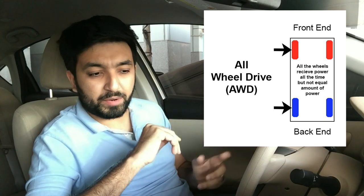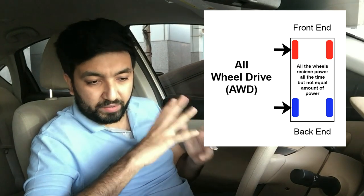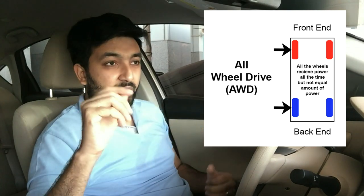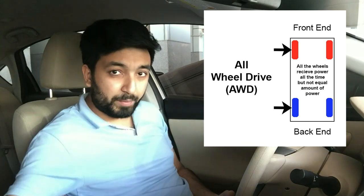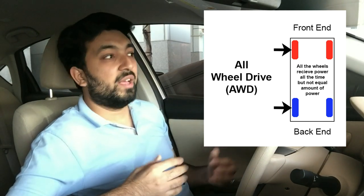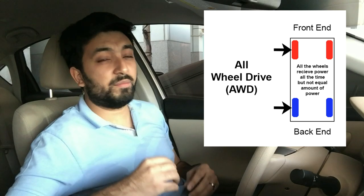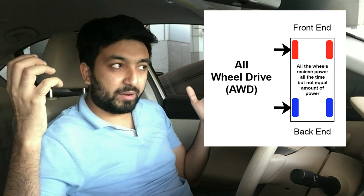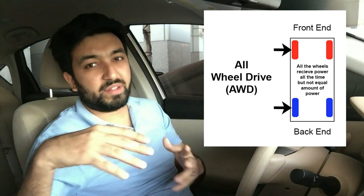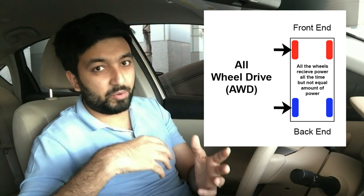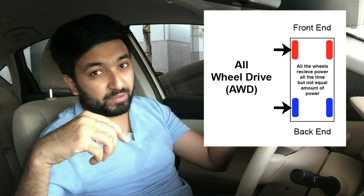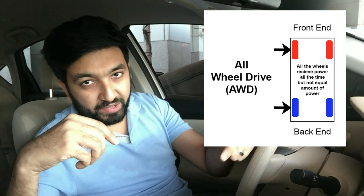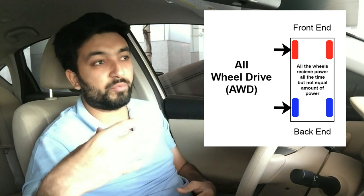The next type of drive system is the all-wheel drive system. In this system, the engine powers all four wheels constantly, though not an equal amount of power goes to all wheels. This system is suitable for supercars — for example, the Audi R8 has an all-wheel drive system. All four wheels are constantly driven, and an electronic ECU controls the power delivered to each wheel using sensors.